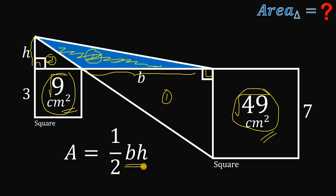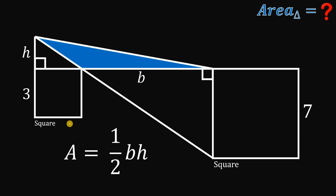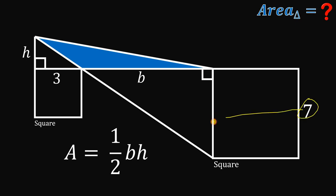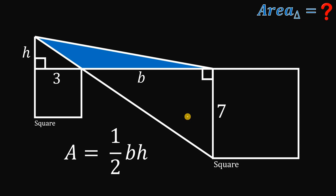Now, since this is a square, all sides must be equal. So if this side is 3, the other side over here is also 3. Likewise, if this side is 7, the other side must also be 7, because again, this is a square and all sides are equal. Now we can see similar triangles here.